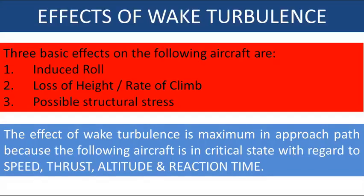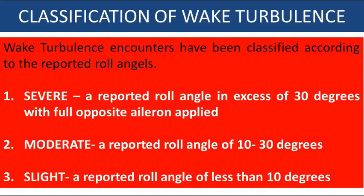Three basic effects of wake turbulence on the following aircraft are: induced roll, loss of height or rate of climb, or possible structural stress. The effect of wake turbulence is maximum in the approach path because the following aircraft is in a critical state with regard to speed, thrust, altitude, and reaction time. Wake turbulence encounters are classified by reported roll angle: severe is over 30 degrees, moderate is 10 to 30 degrees, and slight is less than 10 degrees.